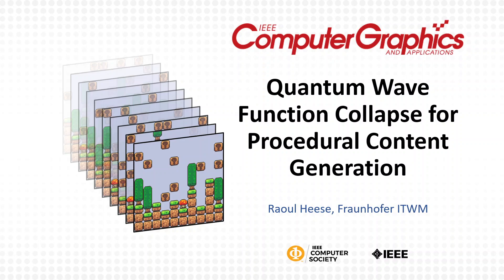Procedural content generation has applications in video games, art, and design, where the need for algorithmically generated content is widespread. Content in this context can have a broad range of meanings—images, 3D models, game levels, text, sound, or a combination of these, to name just a few examples.